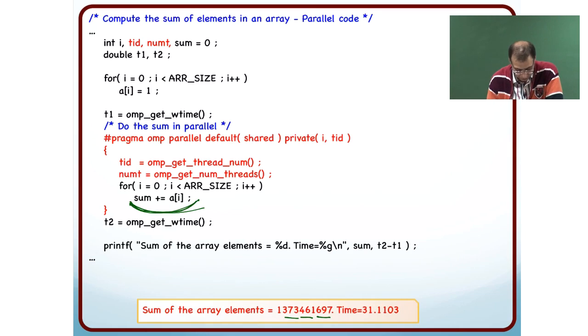And all the threads are trying to update sum together. Doing an increment or addition, if I want to do sum plus equal to A i, even though in C it looks like a single instruction, it is broken down into a number of instructions that data is fetched into the register, incremented and then put back into the memory.